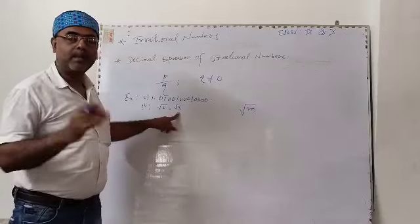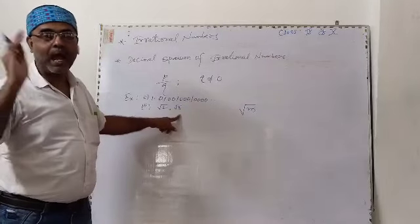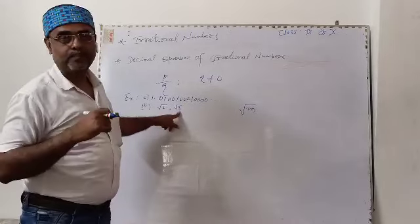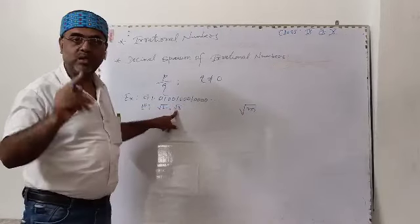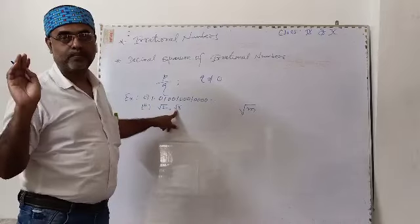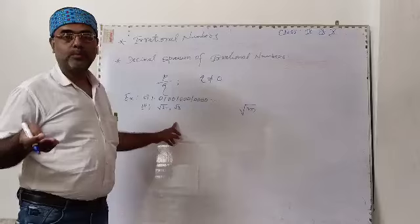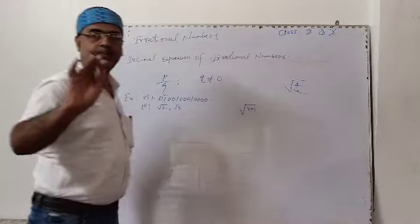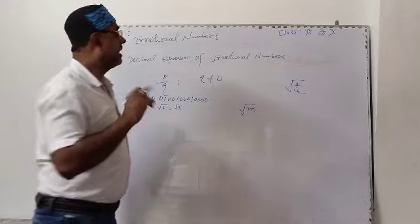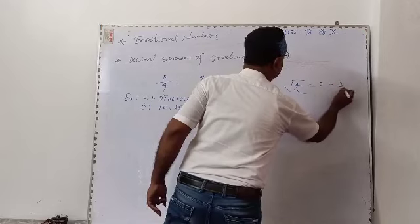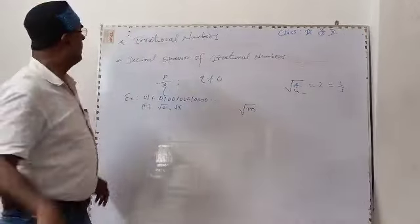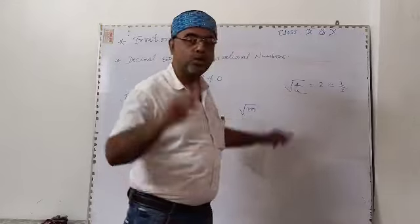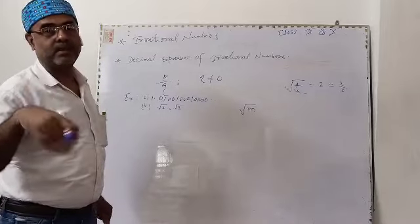Similarly, for root 3, the value of m is 3, which is a positive integer and not a perfect square, so root 3 is also irrational. However, if m is equal to 4, you know that 4 is a perfect square. Its square root is 2, which equals 2 upon 1, meaning it can be expressed in the form of p by q. Therefore, root 4 is not an irrational number — it is a rational number.